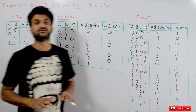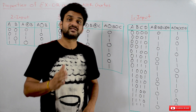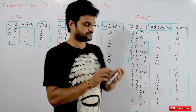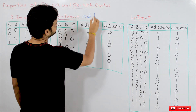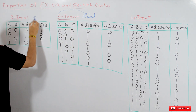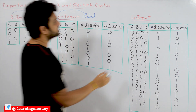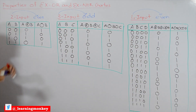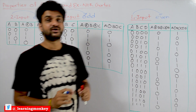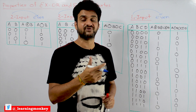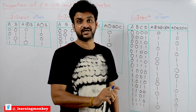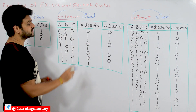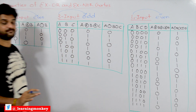So what is the property we need to understand? Whenever the number of inputs is odd, the outputs generated by XOR and XNOR are the same — three is an odd number. Whenever the number of inputs is even — two and four are even numbers — the outputs of XOR and XNOR are complements of each other.